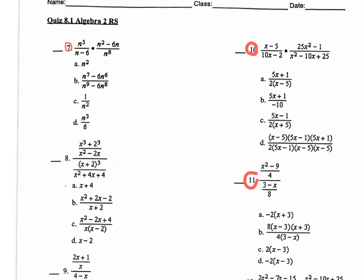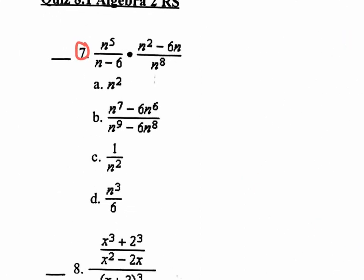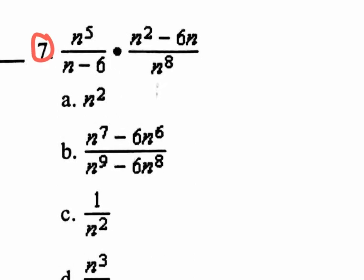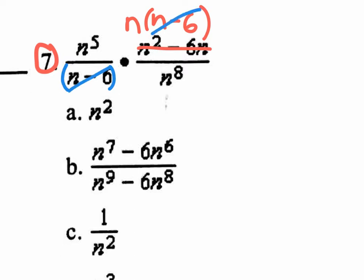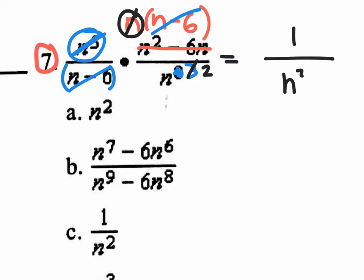Flip to the back of the first page of the quiz. Factor everything possible. You can't factor the first two terms, but the bottom right you can factor — pull out an N, leaving N − 6 on the inside. Then cancel anything alike on top and bottom. The N − 6 cancels with that N − 6. There are 5 N's on top and 8 on the bottom: 5 cancel, leaving 3 N's on the bottom. The single N up top cancels with one of those 3, leaving 2 on the bottom. Nothing is left on top, and on the bottom you have N². That's your final answer.